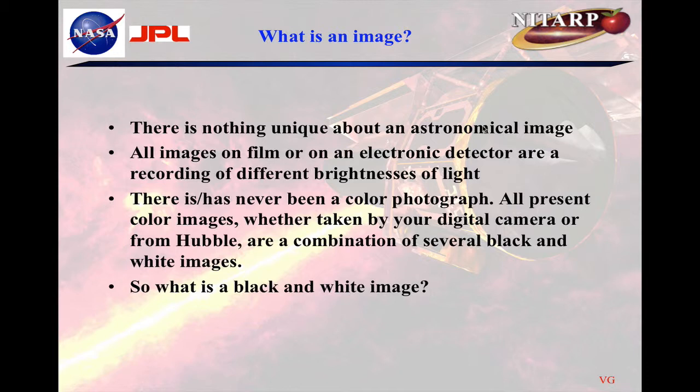One thing that might confuse people is that there technically has never been a color photograph — meaning something that recorded all of the different wavelengths simultaneously and reproduced them simultaneously. There are some chips trying to do that today, but fundamentally all present color images, whether from your phone camera, an expensive SLR, or the Hubble Space Telescope, are a combination of several black and white images.